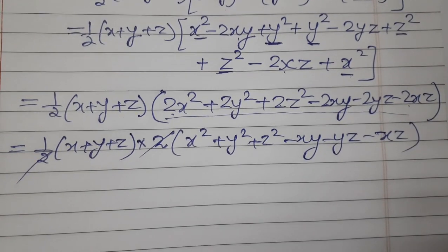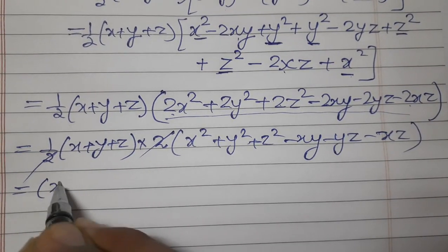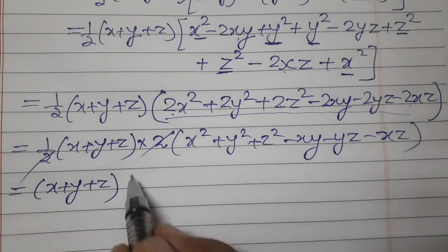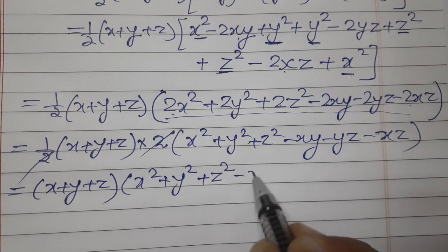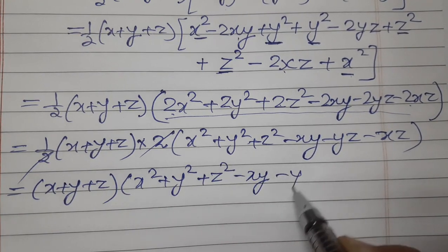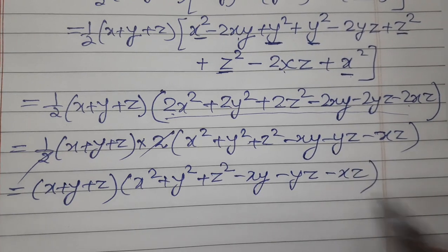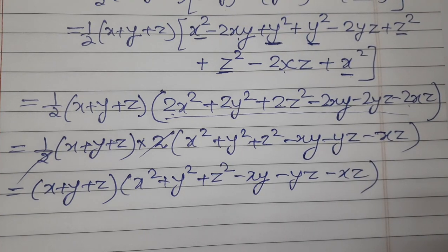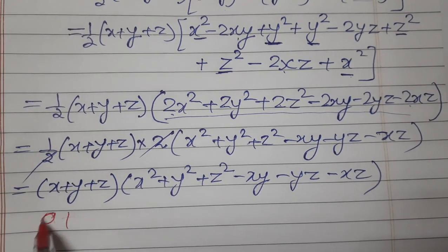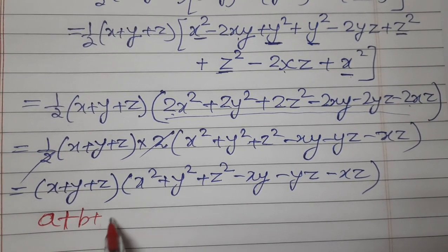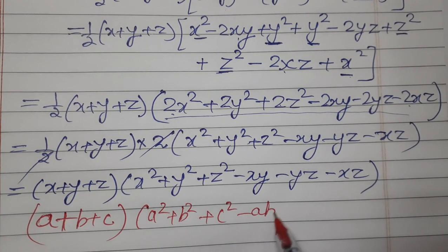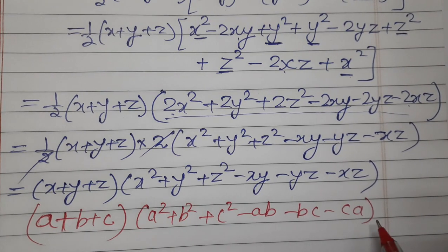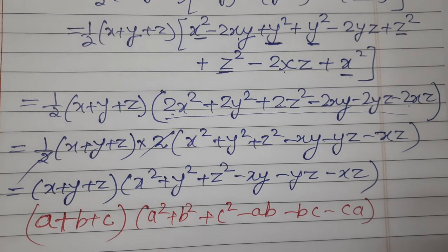What is left is (x + y + z)(x² + y² + z² - xy - yz - xz). Do you remember which identity this is? It is (a + b + c)(a² + b² + c² - ab - bc - ca) — this is the 8th identity.